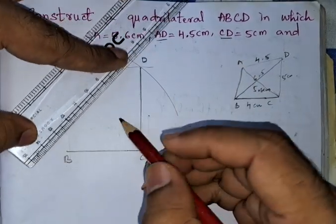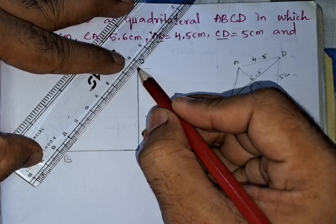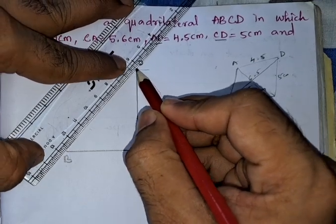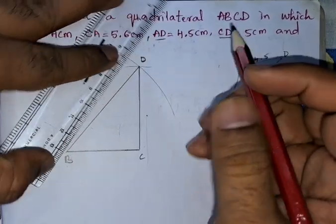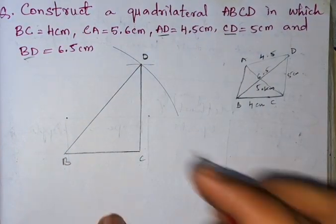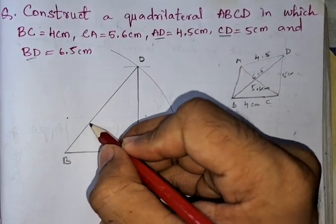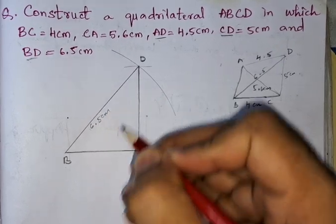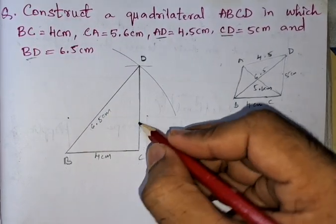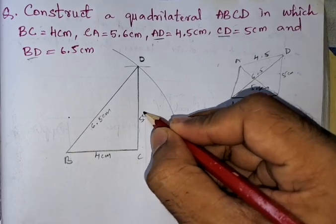Now let us join C to D and B to D. So from B to D it is 6.5 centimeters, BC is 4 centimeters, and CD is 5 centimeters.